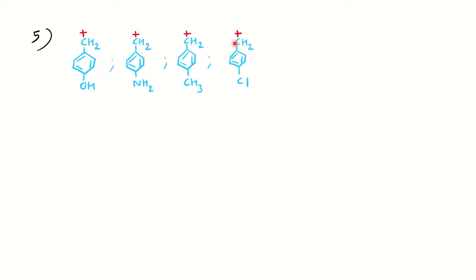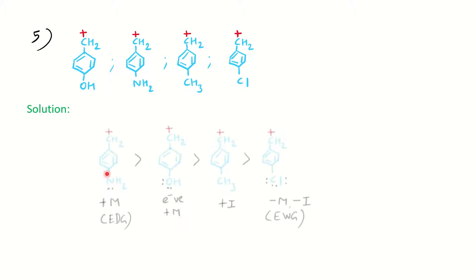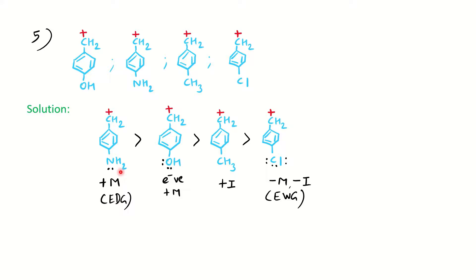Stability order: NH2-substituted is most stable due to strong plus-M effect. OH comes next - both are electron-donating groups, but oxygen being more electronegative than nitrogen donates less readily, giving weaker plus-M effect. CH3 provides plus-I effect only - remember mesomeric effect overpowers inductive effect. Finally, the electron-withdrawing group (Cl) provides minus-M or minus-I effect, destabilizing the carbocation most.